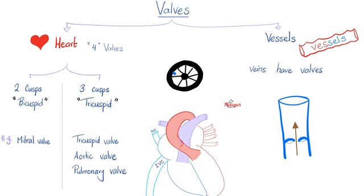Between the right atrium and the left atrium there is a foramen known as the foramen ovale. Blood goes from the right atrium to the left atrium through the foramen ovale, which is open in the fetus but not in adults. Blood then goes from left atrium to left ventricle, from left ventricle to the aorta, and from the aorta throughout the body — this is the systemic circulation.